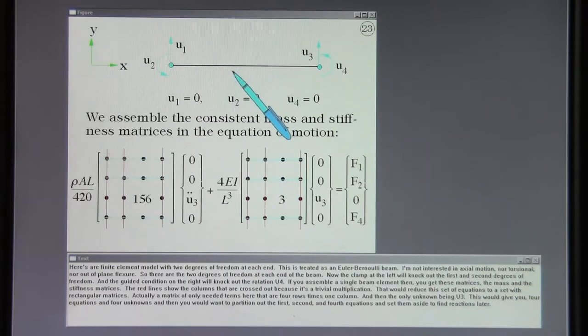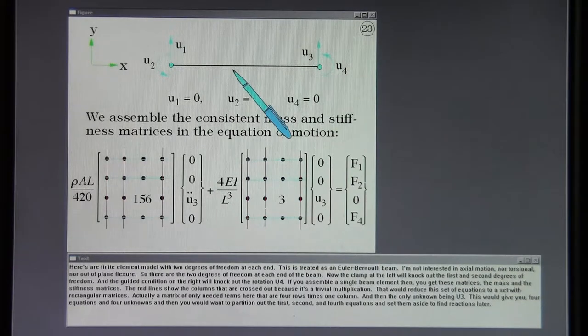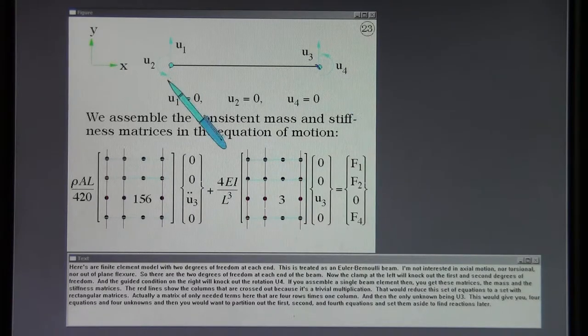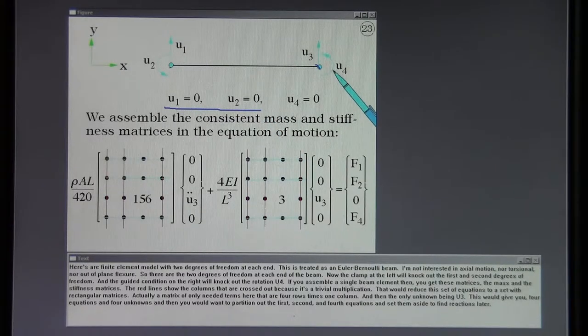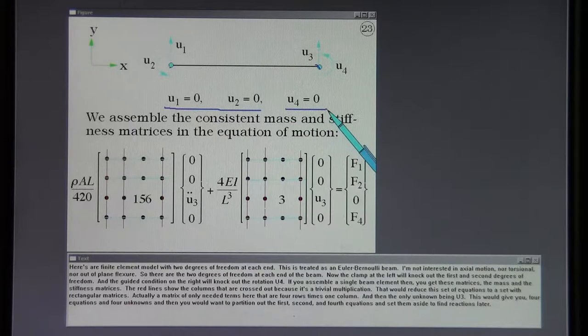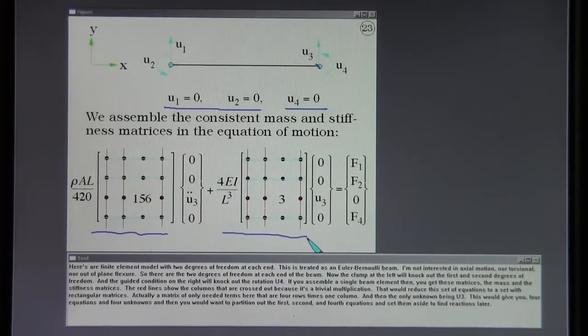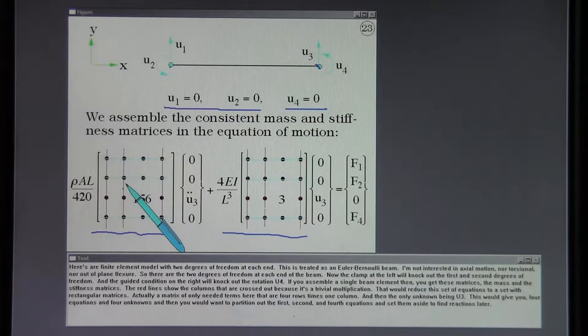Here's our finite element model with two degrees of freedom at each end. This is treated as an Euler-Bernoulli beam. I'm not interested in axial motion nor torsional nor out-of-plane flexure. So there are the two degrees of freedom at each end of the beam. The clamp at the left will knock out the first and second degrees of freedom and the guided condition on the right will knock out the rotation U4. If you assemble a single beam element then you get these matrices, the mass and the stiffness matrices. The red lines show the columns that are crossed out because it's a trivial multiplication.